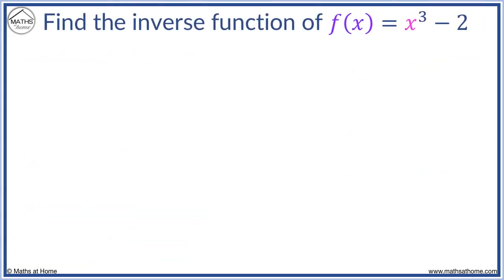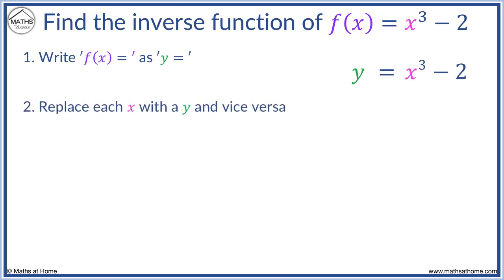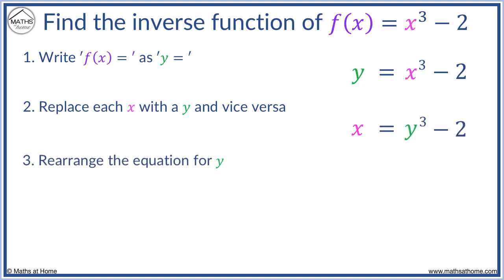Find the inverse function of f of x equals x cubed minus 2. We write y equals x cubed minus 2. We replace y with x and x with y. We rearrange for y. We first add 2 to remove the minus 2 — we get x plus 2 equals y cubed. We now cube root to remove the cube. We get the cube root of x plus 2 equals y.